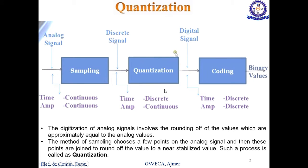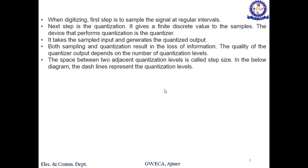The digitization of the analog signal involves rounding down values which are approximately equal to the analog value. This process is done in quantization. The method samples a few points on the analog signal and then these points are rounded off to near the stabilized level — this process is called quantization. When digitizing, the first step is to sample the signal at regular intervals. The next step, quantization, gives a finite discrete value to the samples. The device that performs quantization is the quantizer, which is basically the ADC — it takes the sampled input and generates a quantized output.